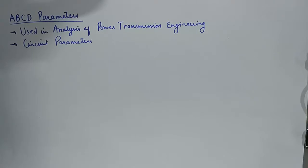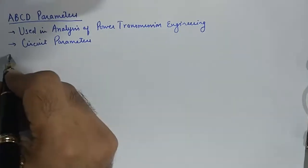There are a few things worth noting about ABCD parameters. ABCD parameters are used in analysis of power transmission engineering. They're also known as circuit parameters, they're also known as transmission parameters.